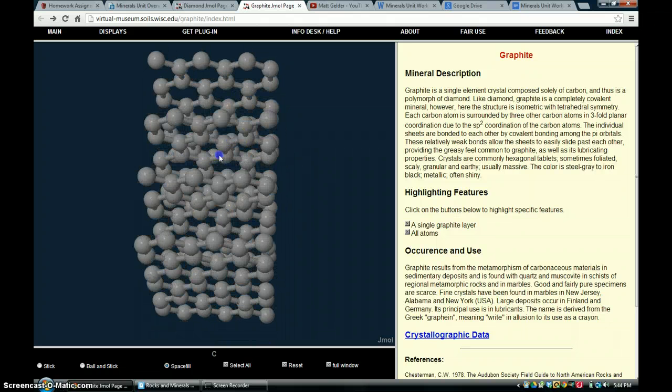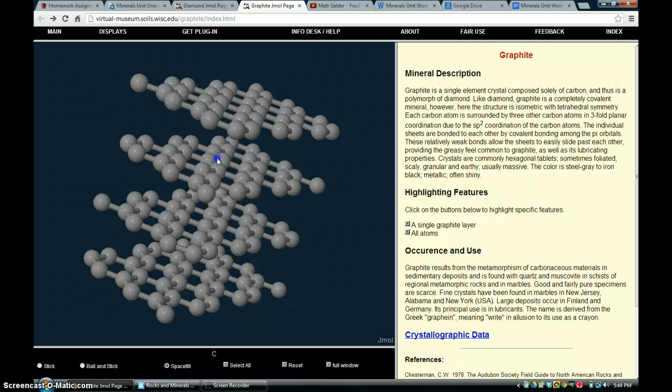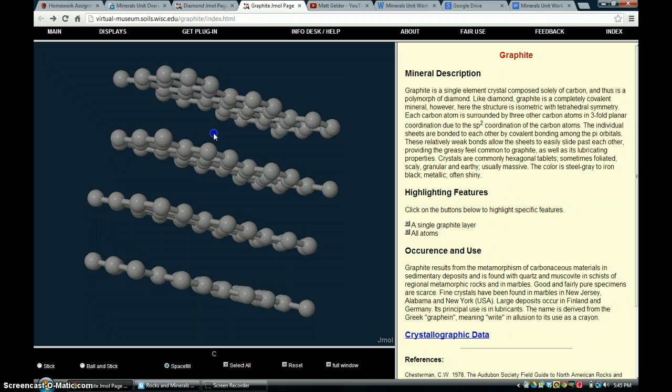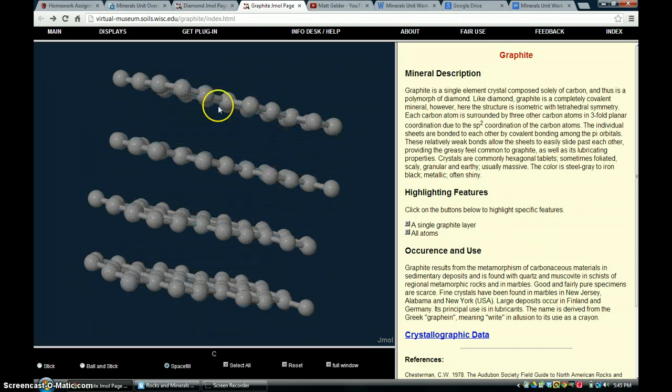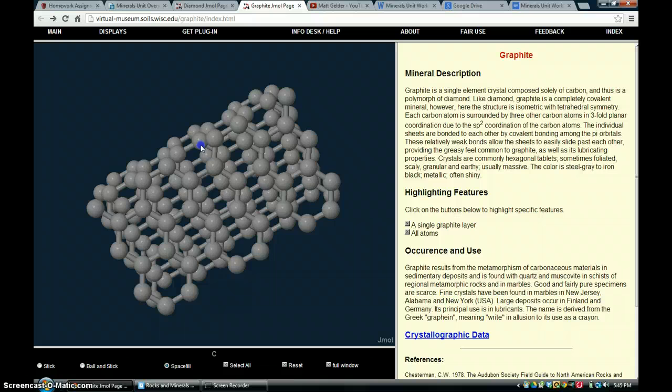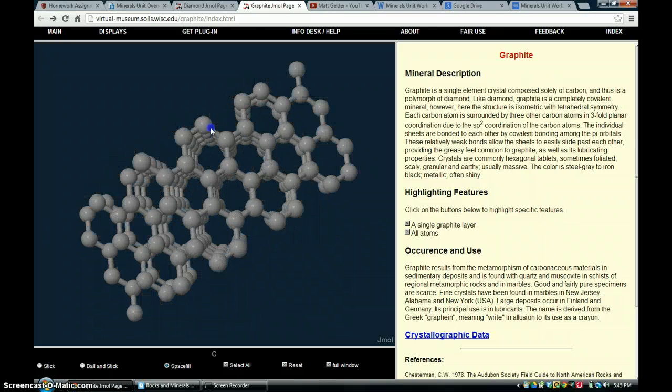And if I rotate this, you can start to see what's happening here, is that these molecules are in sheets. These sheets of graphite are held together by other weak bonds, but they're not as strong as the sticks that hold the molecules together to the adjacent molecules.